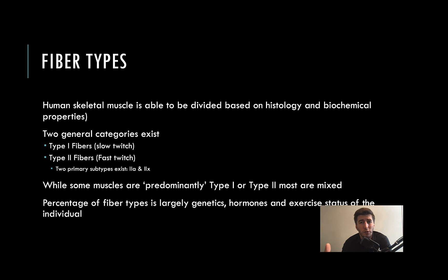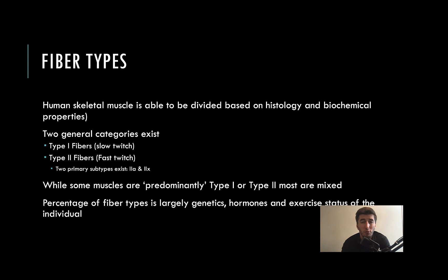Realistically, there's only so much you can do to transition fiber type. You can create in-between fibers somewhat, and the science is mixed on that. For the most part, the percentage of fibers within your body and specific muscle groups is going to be genetically driven. That's why they say sprinters are born and marathoners are made — you cannot shift your muscle fiber typing to an extreme.